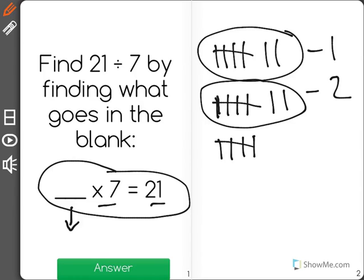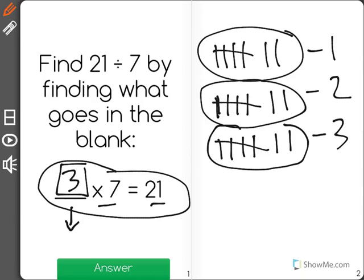15, 16, 17, 18, 19, 20, 21. Okay. It looks like on my third group, I now have 3 groups of 7, which is equal to a total of 21. 3 is the number that goes in the blank. And that is also your answer to 21 divided by 7.